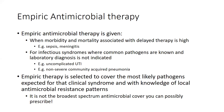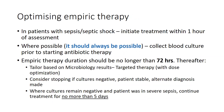When selecting empiric therapy, you're looking to cover the most likely pathogens expected for that clinical syndrome, incorporating knowledge of local antimicrobial resistance patterns. It's not the broadest cover that you can possibly prescribe — we know that this is where we have selection of unnecessary antimicrobial resistance when we go excessively broad. In patients with sepsis and septic shock, we want to start appropriate therapy within an hour of assessment.